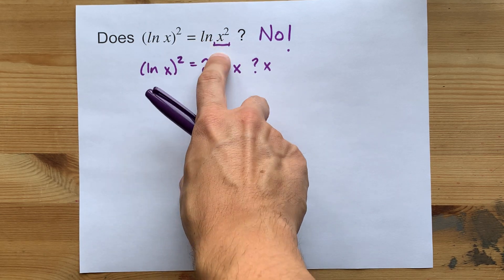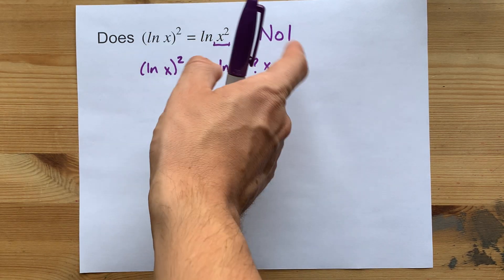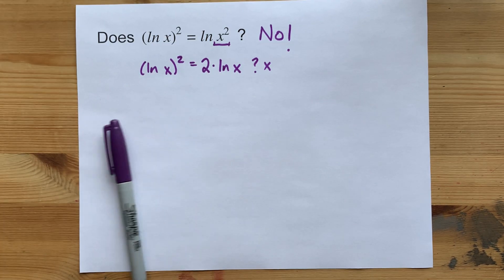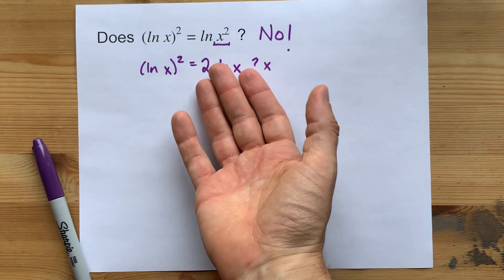And the natural logarithm of something squared is not the same as squaring whatever you got for the natural logarithm of the number on its own. Pretty straightforward. They're not the same.